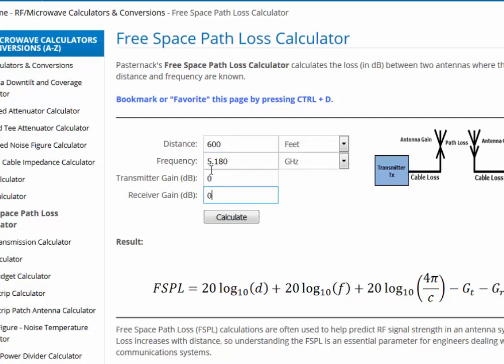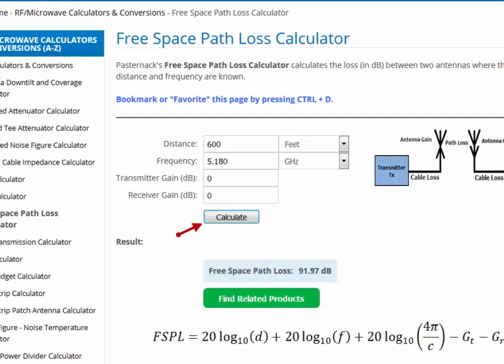I've already included the transmit and receiver gain so I'll enter a zero for both in this calculator. Click calculate and we see the free space path loss is 91.97 dB. Let's round that to 92 dB.